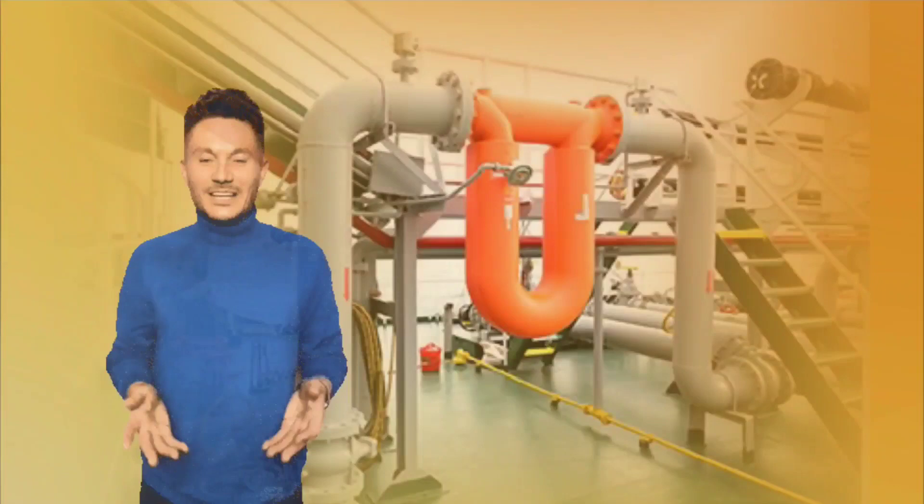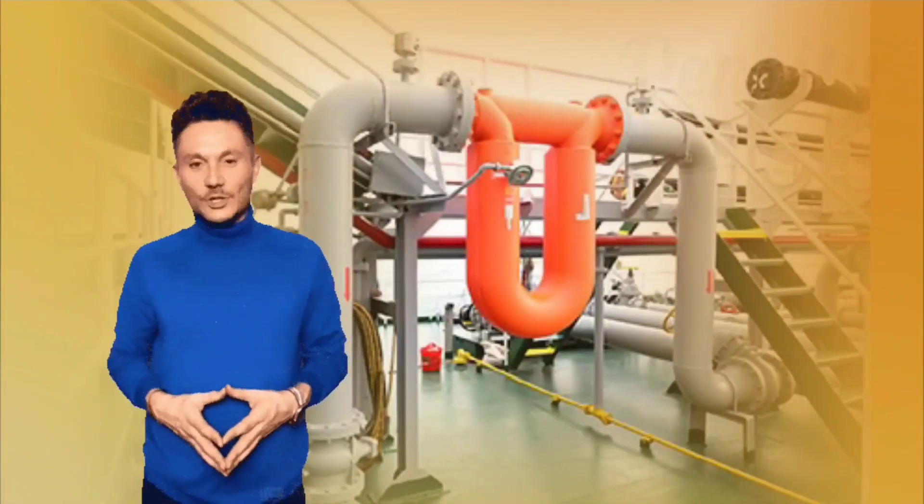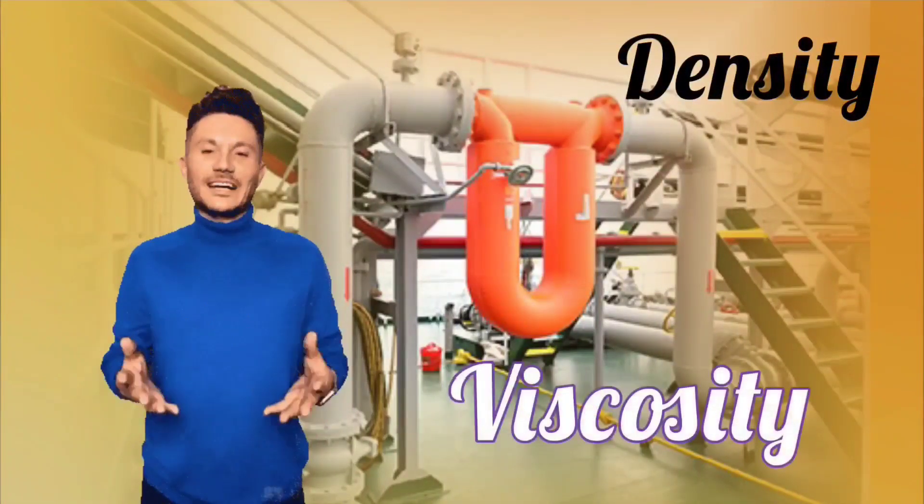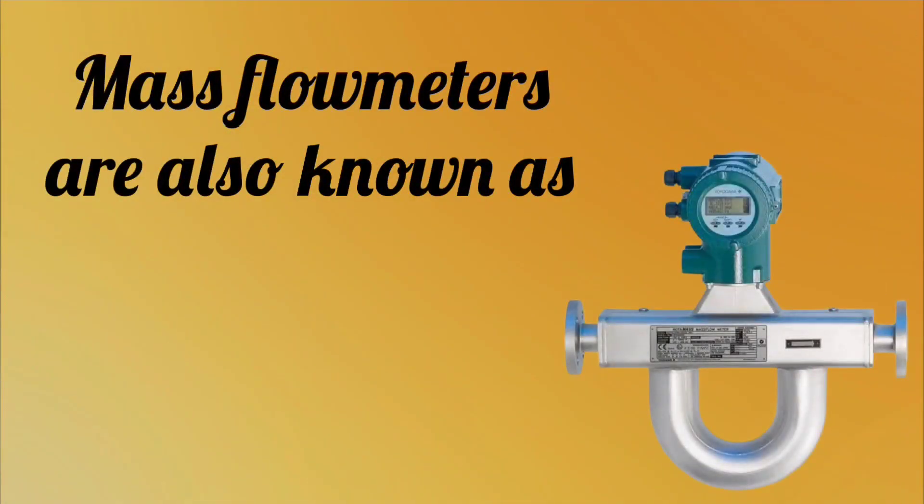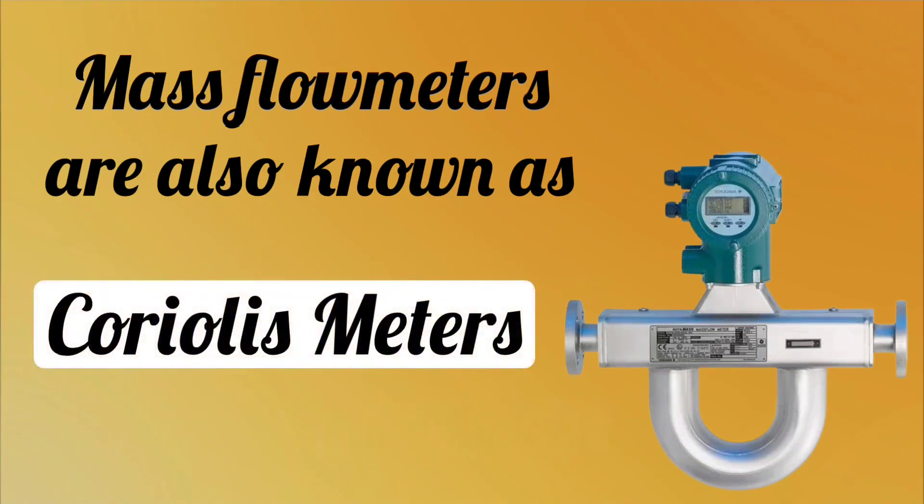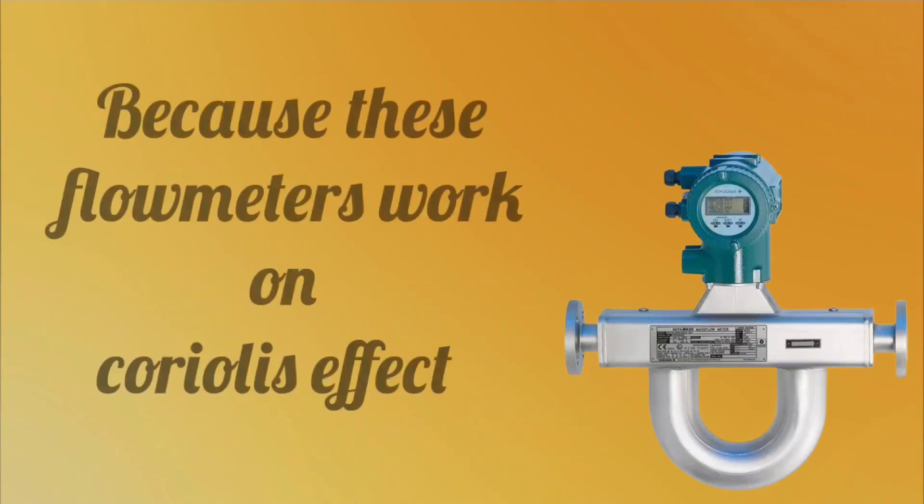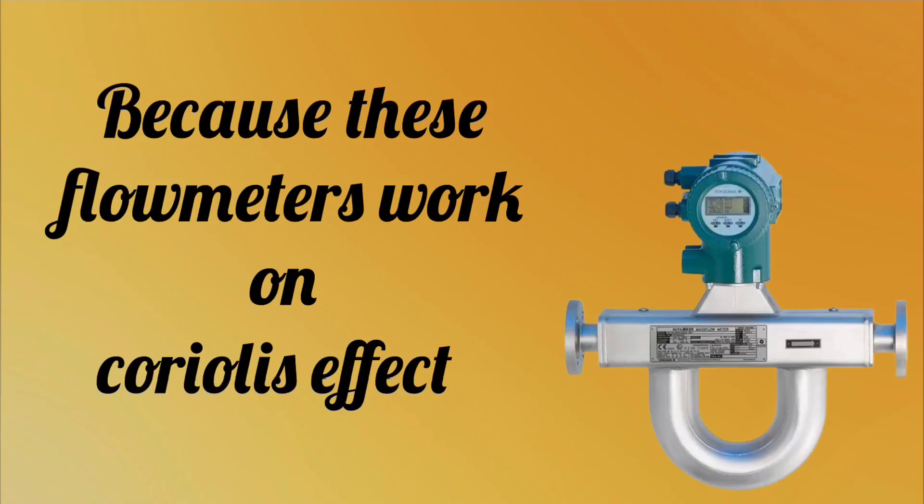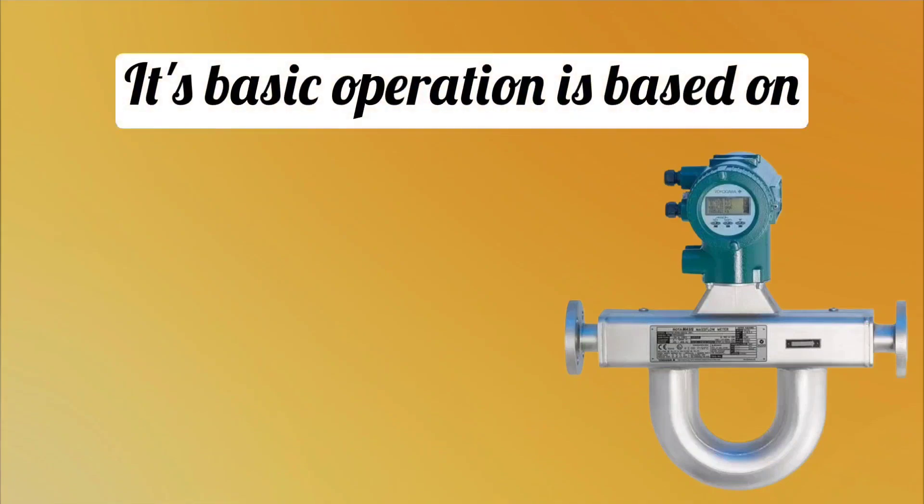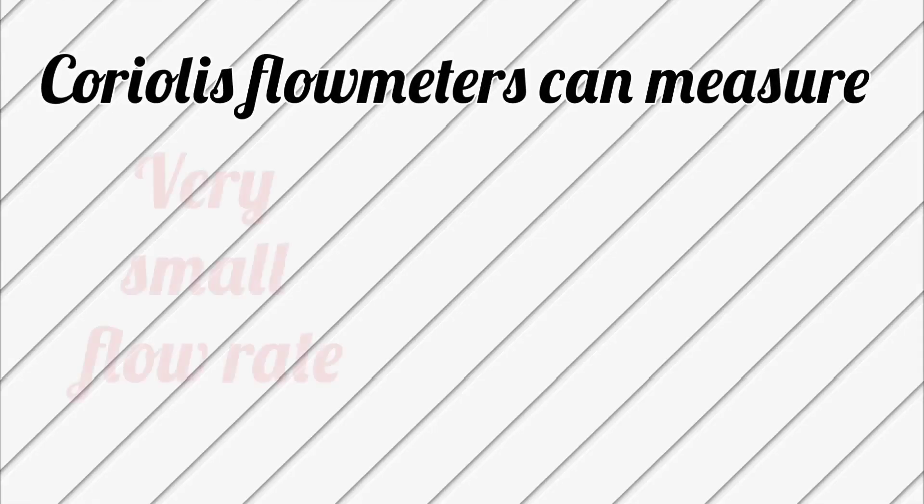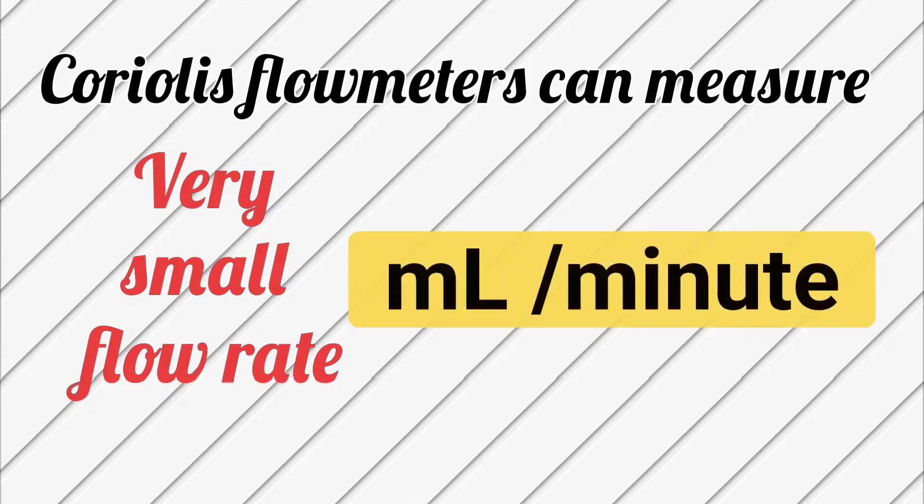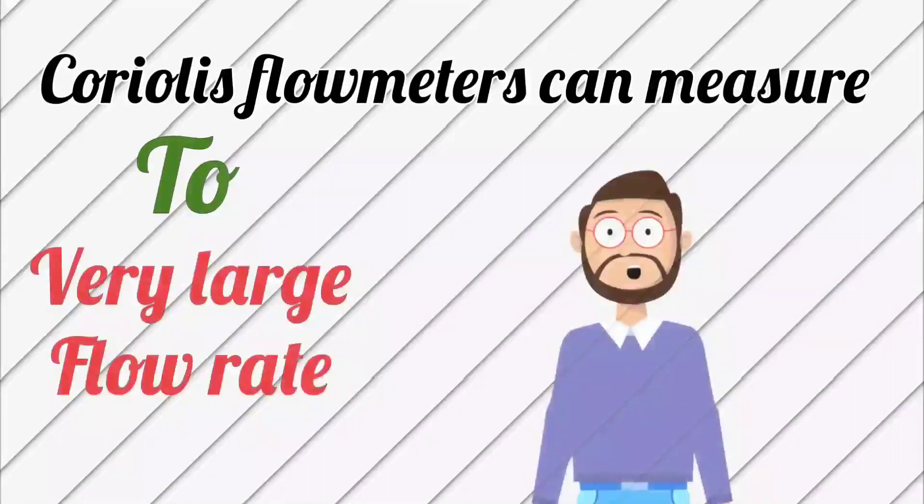Mass flow meters, in addition to the flow rate, can also measure the density, viscosity of the flowing substance. Mass flow meters are also called Coriolis meter or Coriolis flow meters. The reason behind this is, these flow meters work on Coriolis effect. The basic operation of Coriolis flow meter is based on motion mechanics. Coriolis flow meters can measure very small rate, from milliliters per minute to thousands of liters per minute.